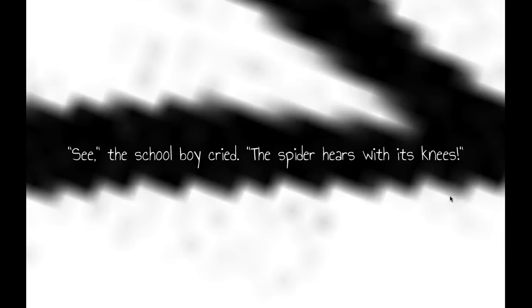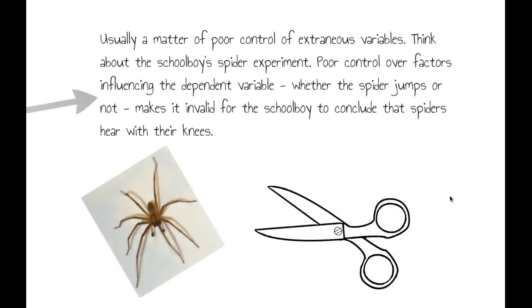If he could isolate the hearing function of the knees from the movement function, he could do the experiment. But he can't. Chopping the legs off not only takes away where he thinks the ears are, it also takes away the ability of the spider to register hearing a noise at all. Poor control over factors influencing the dependent variable makes it invalid for the schoolboy to conclude that the spider hears with its knees.